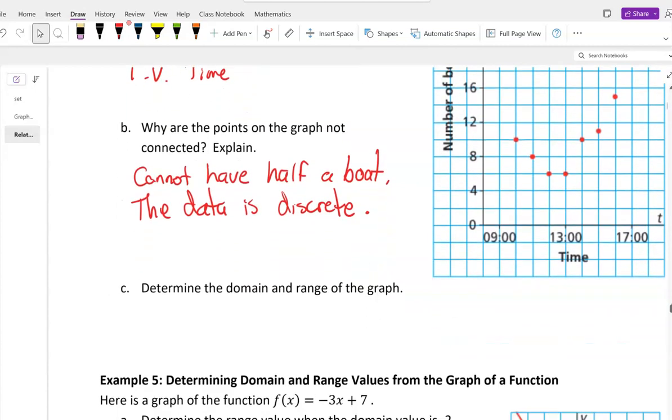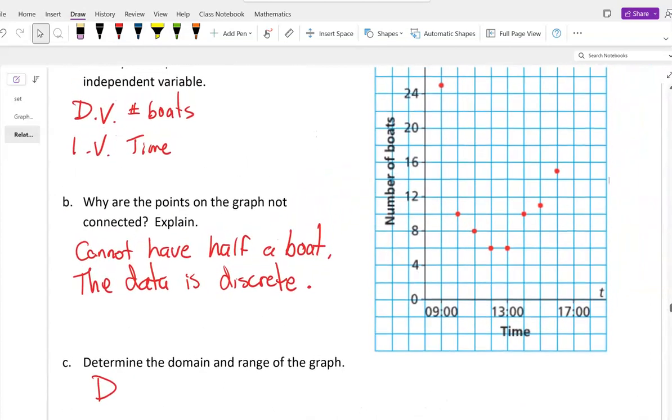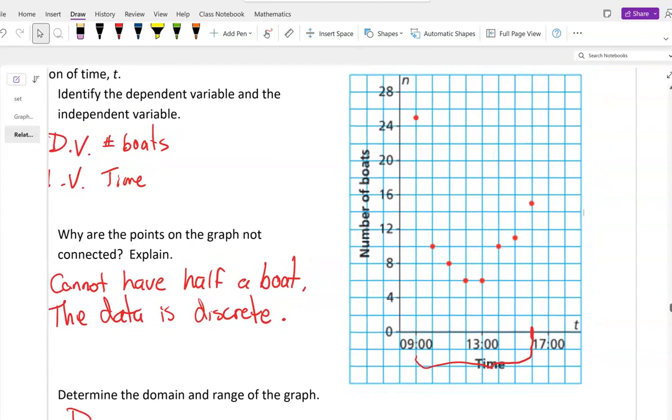Determine the domain and range. This is going to be a little tricky. Sorry for the interruption. Domain. Well, in this graph, it looks like we want to go from our first point is at 9 o'clock, and our last point is here at whatever time this is.